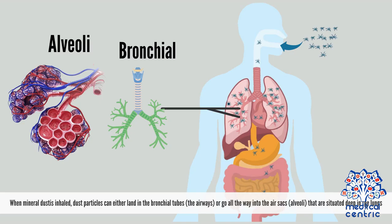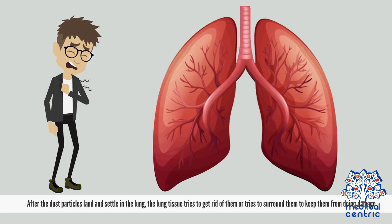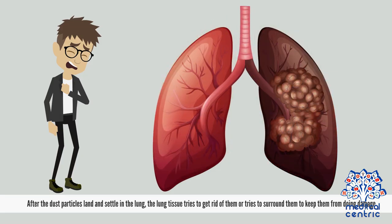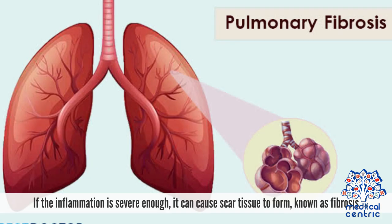When mineral dust is inhaled, dust particles can either land in the bronchial tubes or the airways, or go all the way into the air sacs or alveoli that are situated deep in the lungs. The reaction of the lungs to the mineral dust depends on characteristics like the size and shape of the particles. After the dust particles land and settle in the lung, the lung tissue tries to get rid of them or tries to surround them to keep them from doing damage. Inflammation develops as the body tries to fight them off. If the inflammation is severe enough, it can cause scar tissue to form, known as fibrosis.